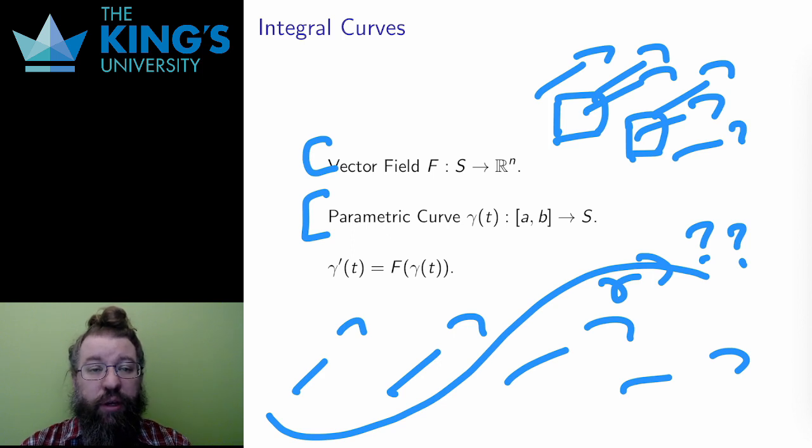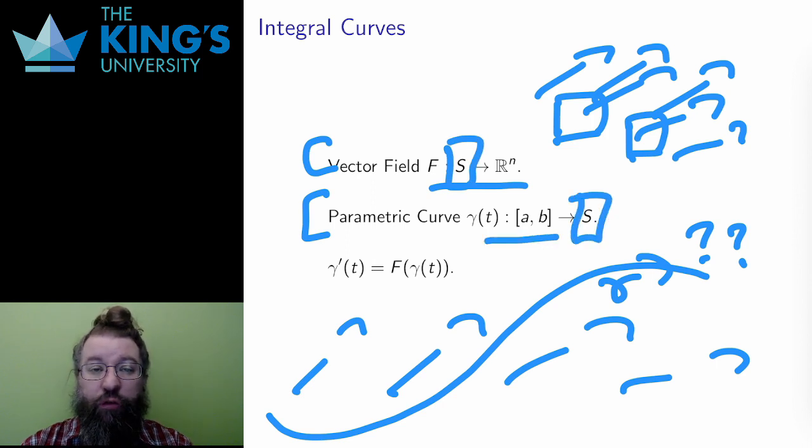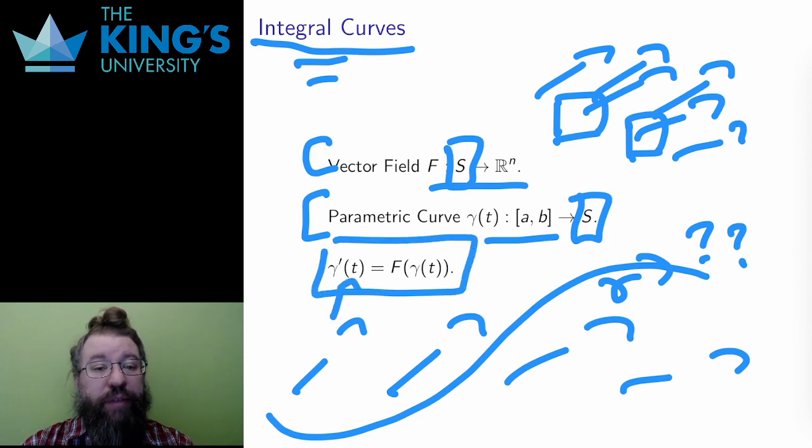Let me define this connection. Say I have a vector field F defined on the domain S in R^N, and say I have a parametric curve with outputs in the region S. Then the curve γ is called an integral curve of the vector field if the tangents of the curve are the same as the vector field evaluated along the curve.